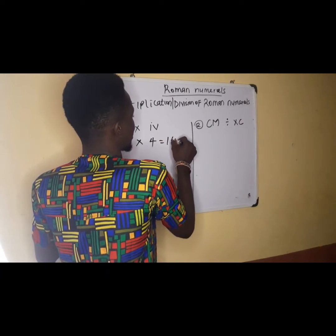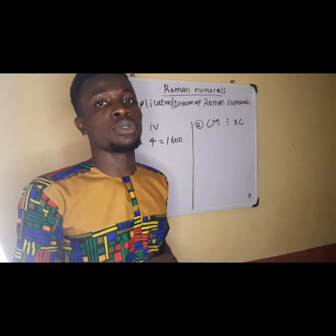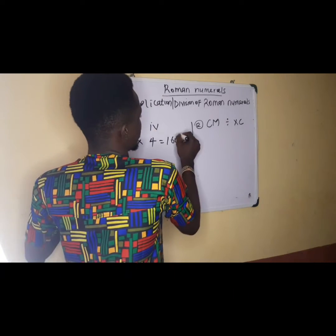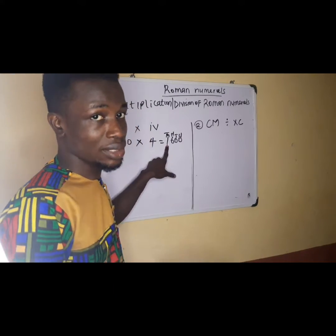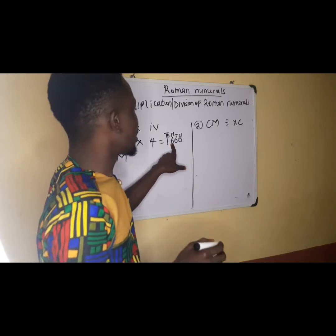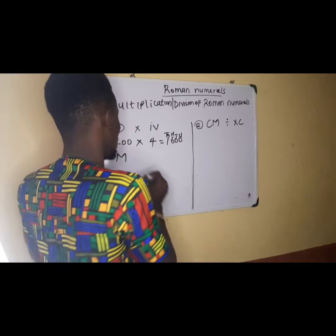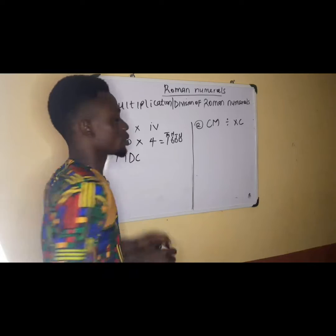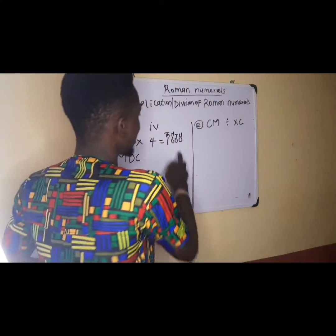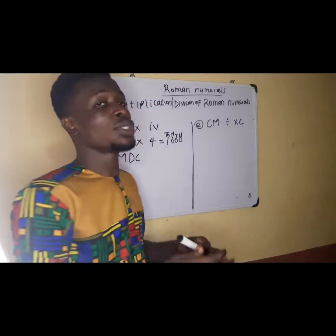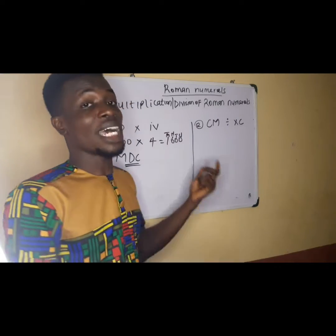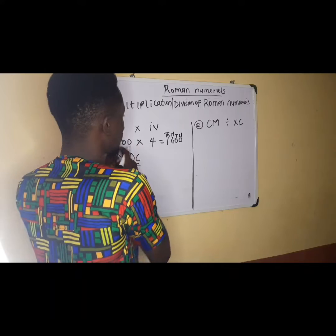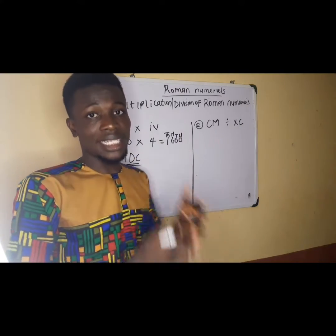Now let's change 1600 back to a Roman figure. Under thousands you have one, so one thousand simply means M. Under hundreds you have six, so that means 600 — we write DC because that is how you represent 600. Under tens and units we do not have a value, and we do not use a Roman figure to represent zero. So MDC is our final answer. When you multiply, you first change to normal figures, multiply, then change the answer back to Roman figures.